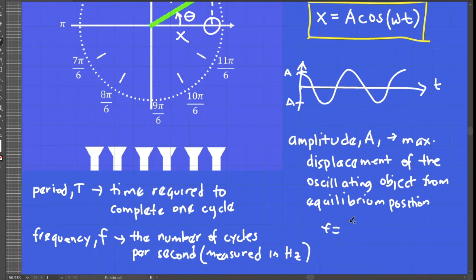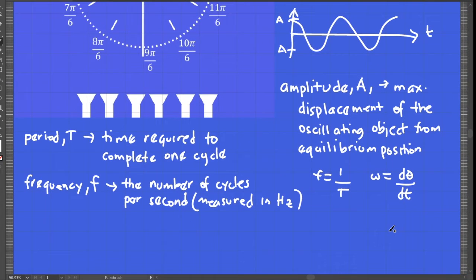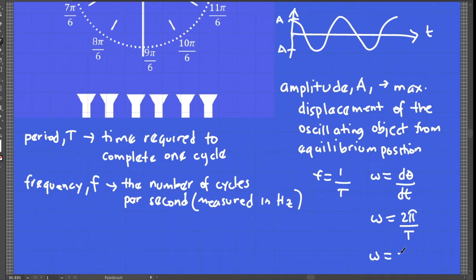Recall that angular velocity is the time derivative of angular displacement, and from the point of view of oscillation we can call omega as angular frequency. For one complete cycle, angular displacement is equal to 2 pi, and the time for one complete cycle is period T. Replacing T with 1/f, we have angular frequency equals 2 pi f.